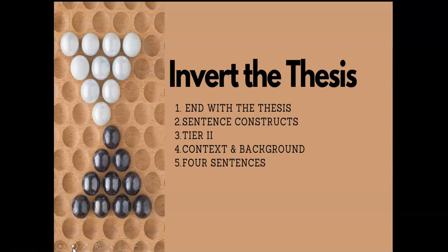Oftentimes when you declare, you switch to plot analysis. So just as a means to avoid them from committing that faux pas, I have them invert. And again, in my videos for literature, you'll see this being the uniform approach. And then for argument, persuasion and synthesis, it's a coin flip between declaring and inverting. And rhetorical analysis, you always want to declare. So check out those videos if you're interested to get more insight on this. So in the inverted model, you're going to end with the thesis, focus on those sentence constructs, tier two level vocabulary, context and background, and exactly four sentences.